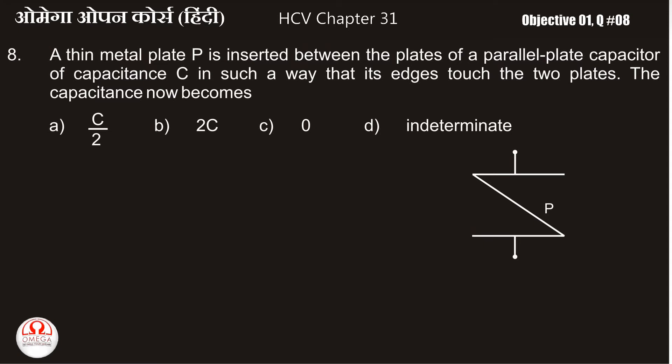किसी system का capacitance उस system पर के charge को उसके potential difference से divide करने पर मिलता है. जब capacitor के दोनों plate के बीच में दोनों plate को touch करता हुआ conductor आप डालते हैं तो दोनों plate के बीच का potential difference 0 हो जाता है. चूंकि इस expression का denominator 0 है, इस system का capacitance defined नहीं है.